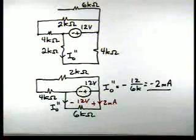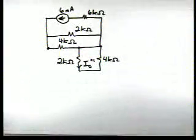Okay, so when the voltage source is active, I0 double prime is equal to minus 2 milliamps. Now, let's analyze it with the 6 milliamp source in the problem. There's our circuit.